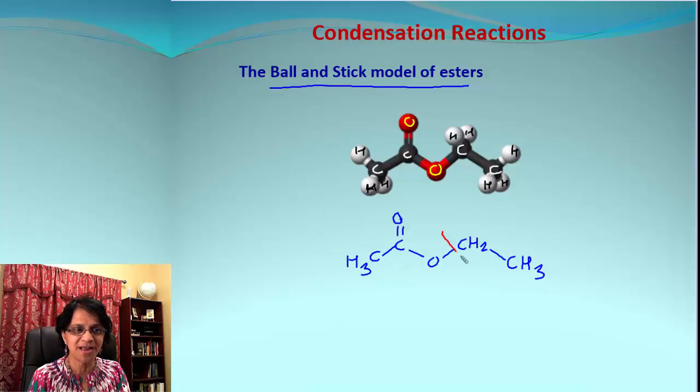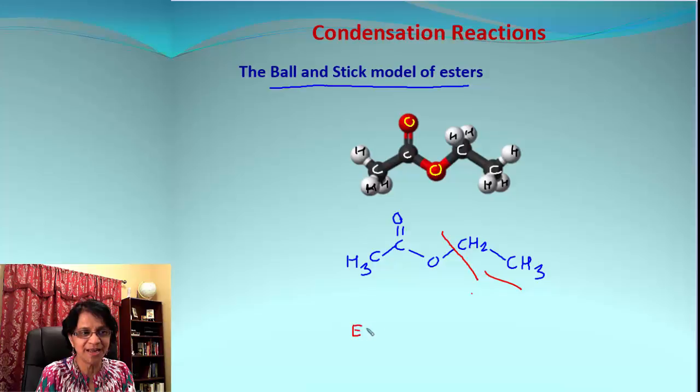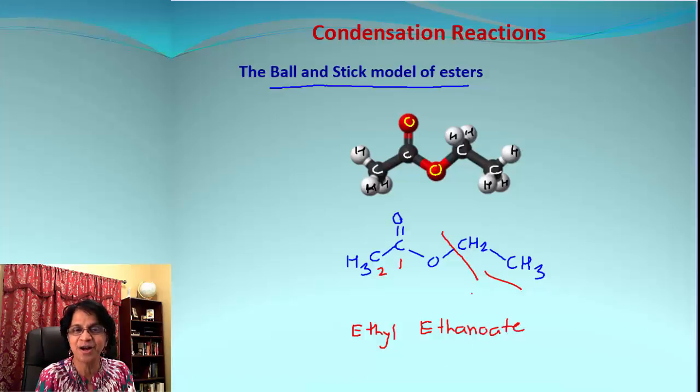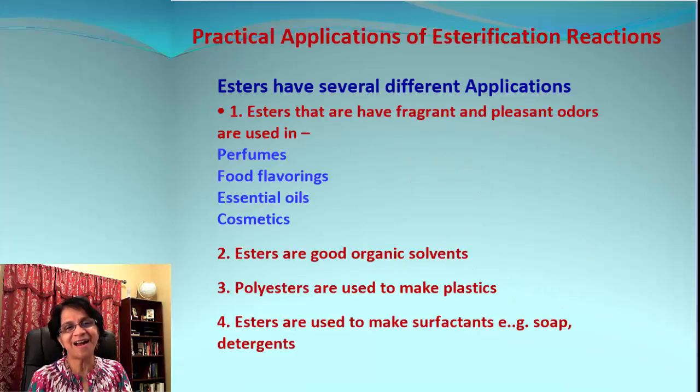So if we translate that ball and stick model into the structure, this is what we get. And how do we name this compound? Let's divide that after that carboxyl group. Whatever comes after that is the alcohol part, that will be ethyl. And this is the acid part, we got two carbon atoms there, that is ethane, an ethanoic acid, so it will be ethanoate. And the compound will be ethyl ethanoate.